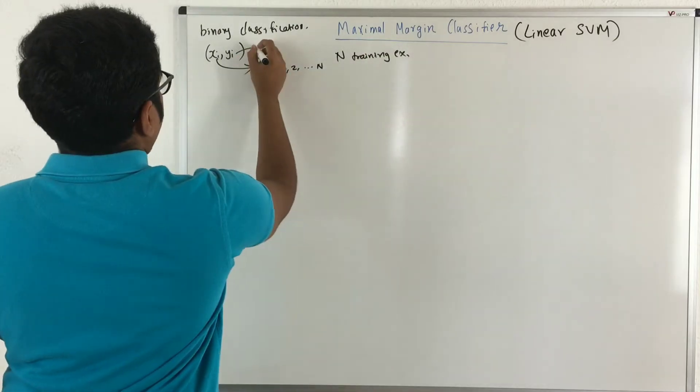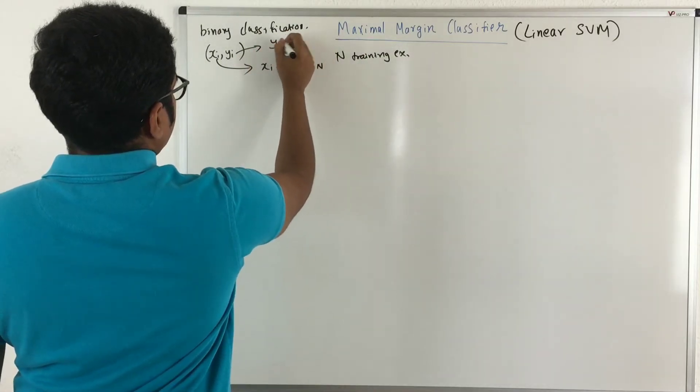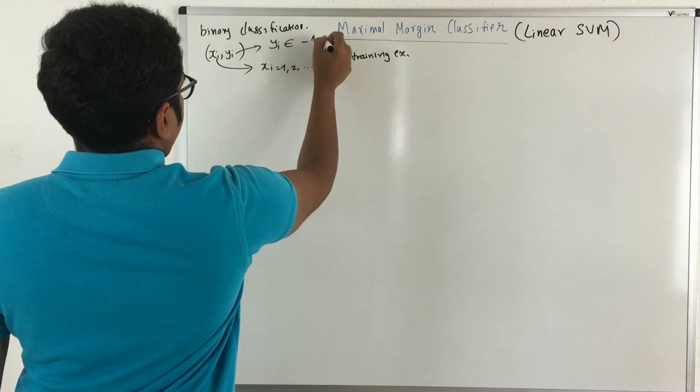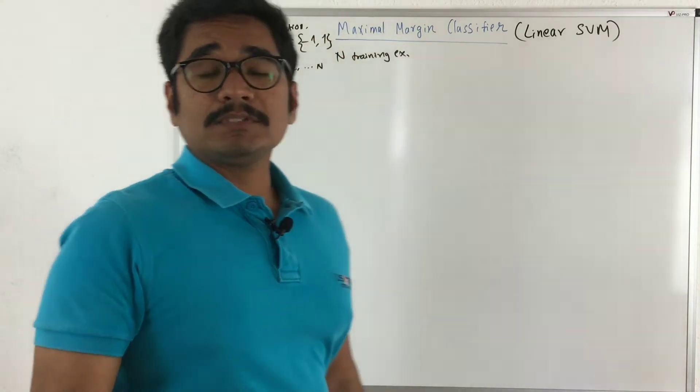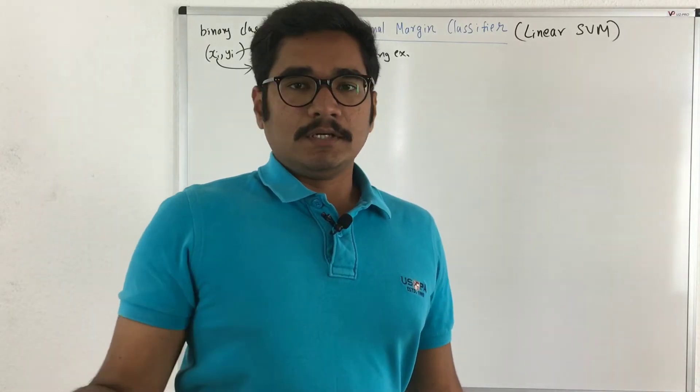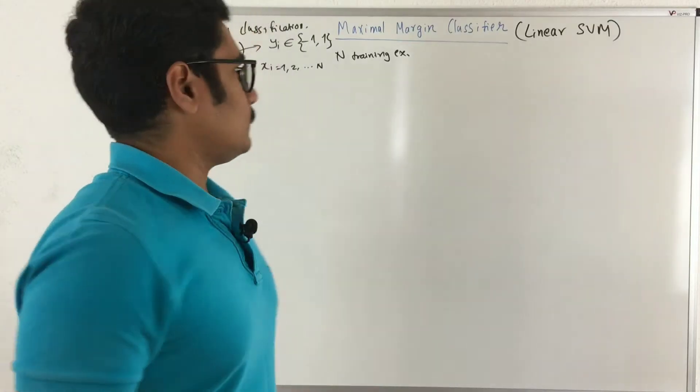And then you have Yi which is the class label. So Yi belongs to a range, say minus 1 to 1. So this is a binary classifier. Either the instance will be a positive example or it will be belonging to a negative or positive class.